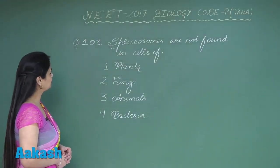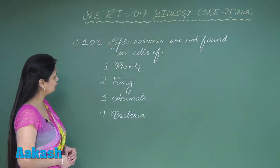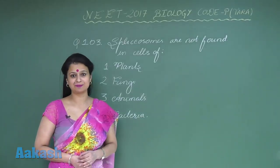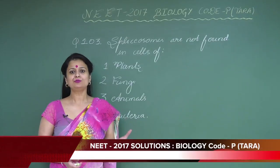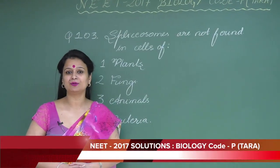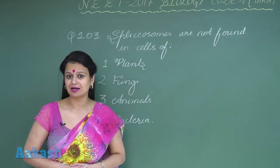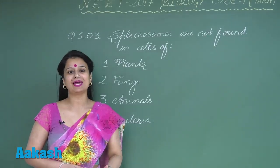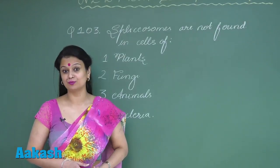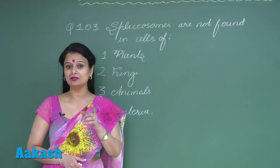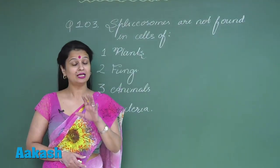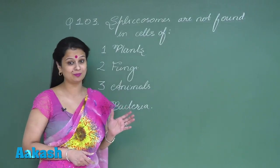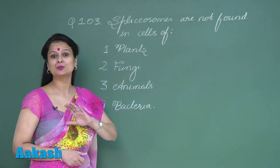In equation number 103, we have to look for the option where spliceosomes are absent. Spliceosomes are made up of snRNA and proteins, and they act as a catalyst for the removal of introns. Introns are only present in eukaryotes.